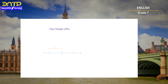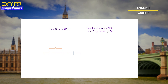What's the difference between past simple and past continuous? Past continuous is also called past progressive in English language. Past simple is about an action that happened in the past. Past continuous is also about an action that happened in the past but continued for some period of time. For example, 'I worked' is past simple, 'I was working' is past continuous.